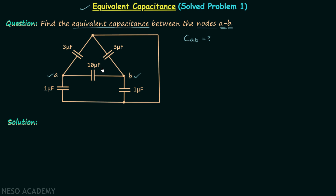Upon analysis it is clear that we are not getting a direct series or parallel combination between the capacitors, and therefore we will look for the equipotential points. This node is node C, and this point here will have the same potential as C. Now we will reconstruct our network from scratch.